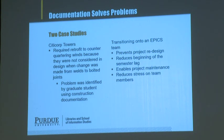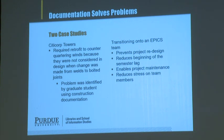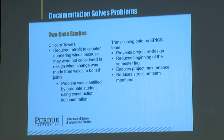We're going to start by talking about two case studies for why documentation is important. The first is Citicorp Tower in New York City. It's famous because it's cantilevered over a church built in the 1700s. The only way the skyscraper could be built was if the church remained intact, as it was on the national register of historic places. The design solution was to put the supports not on the four corners of the building but in the middle of the sides, which changes the forces of the structure dramatically.